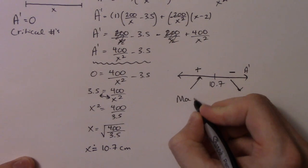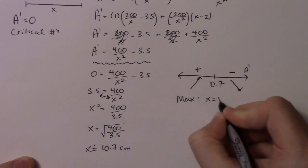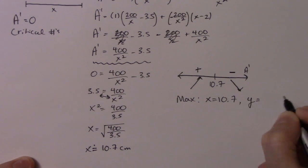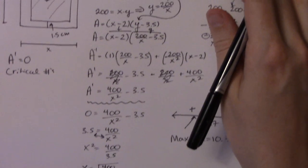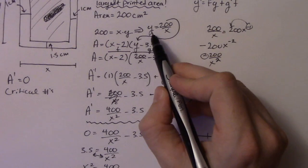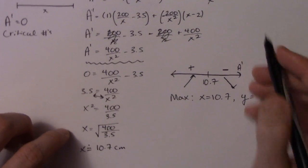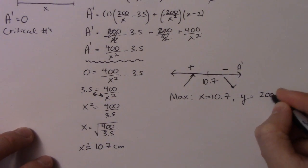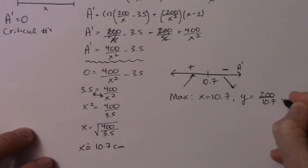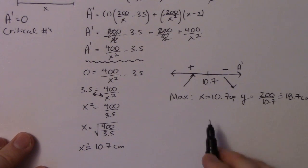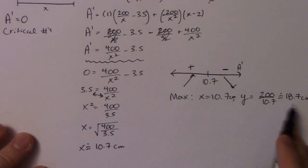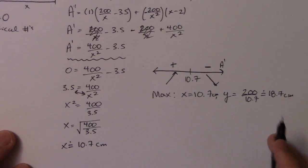So max is at x equals 10.7. So I just need the corresponding y value. So in order to get that, I'll go back up here and use this formula. y is equal to 200 divided by x. So 200 divided by 10.7, and I think that's probably close to about 18.7 centimeters. So there it is. So there's my x value and my y value that give me the largest area.